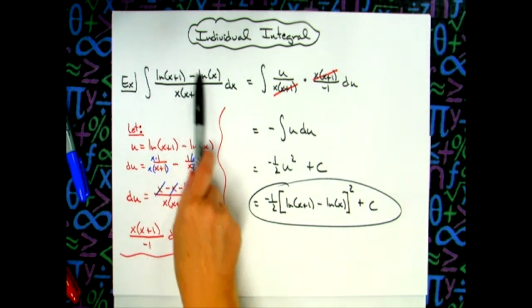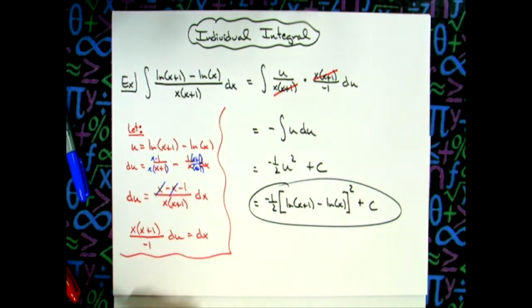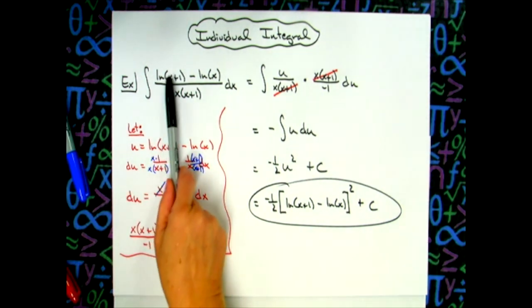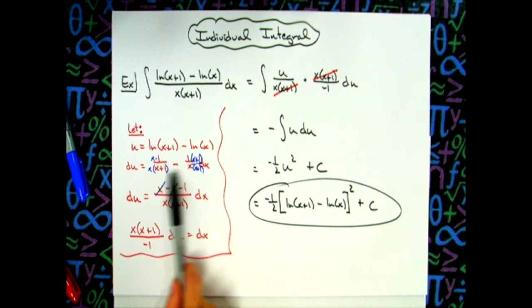So definitely just a straightforward u substitution integral. And the only thing that made it look challenging was that rational expression to begin with with the natural logs. But recognizing taking that derivative of the natural log function is really simple. And then a lot of algebra here, which is a lot of places where calculus gives people problems is it's the algebra within the calculus, not the calculus itself.